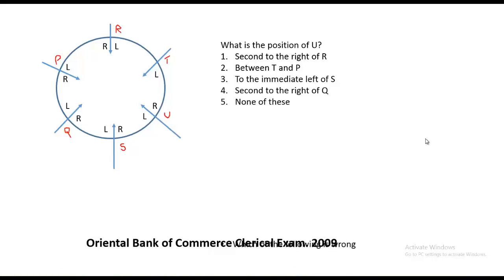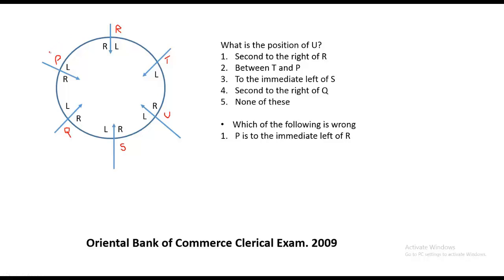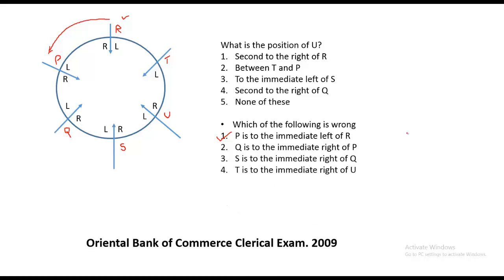Which of the following is wrong? First option: P is to the immediate left of R. R is here, and going in the anti-clockwise direction we see that P is actually to the immediate right of R, not the left. Therefore the first option is wrong, and there is no need to check the other options.